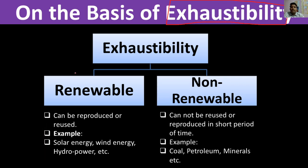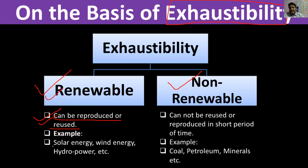On the basis of exhaustibility, resources are classified into renewable and non-renewable. Renewable resources are those which can be reused or reproduced — like solar energy, wind energy, and hydropower. These do not finish after use and can be used again and again.